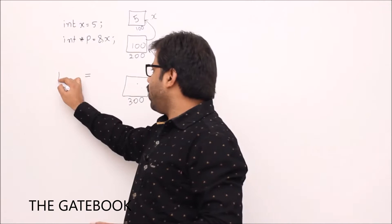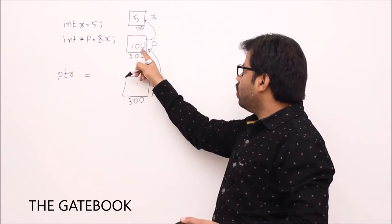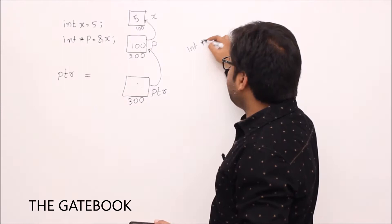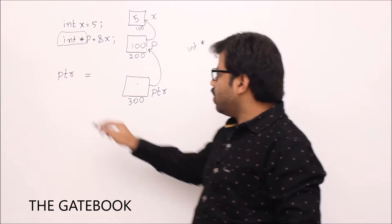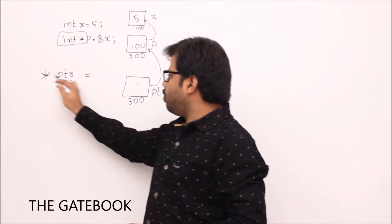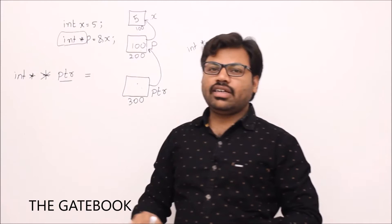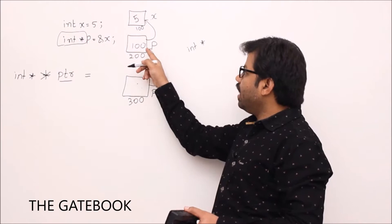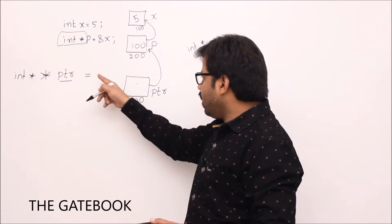Let's give the variable name ptr. So I want a variable ptr and it should point to some object. Tell me the type of the object you want to point to — it's an integer pointer, isn't it? Yes. So this is the type of the object: int star. So you want a pointer to an integer pointer. ptr is a variable and it is a pointer to an integer pointer. The syntax is int double star ptr.